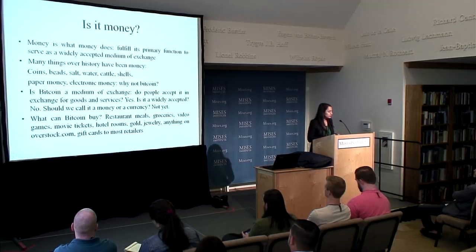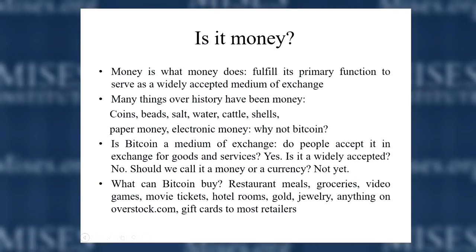The first question we have to answer from the point of view of economics is: what is this thing — is it money? Well, what is money? Money is what money does. Money is defined by its function, not by its form. Anything that is able to serve as a medium of exchange can be money. How do we distinguish a medium of exchange from money or currency? Once it has gained wide usage and is generally accepted as a medium of exchange, it is defined as money.